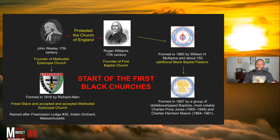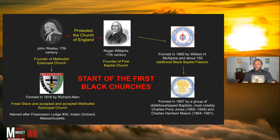Then you get Roger Williams in the 17th century — the founder of the first Baptist church. He made the Baptist movement happen. Out of his church, William H. McAlpine and about 150 additional Black Baptist pastors, tired of the segregation and racism, decided to start their own National Baptist Convention Incorporated. But where did they learn Baptist ideology from? The same place — from Roger Williams, just as Richard Allen learned the Methodist ideology from John Wesley.